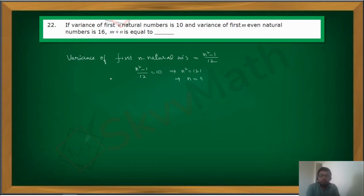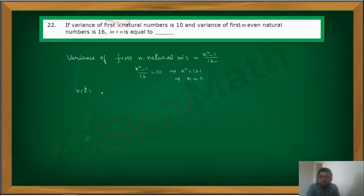Now we got the value of n. Before finding m, let me tell you: if the data of variable X is multiplied by a constant a and a constant b is added to the data, the new variance becomes Var(aX + b). The variance of aX + b is independent of b — it becomes a² times the original variance, that is, a²·Var(X).